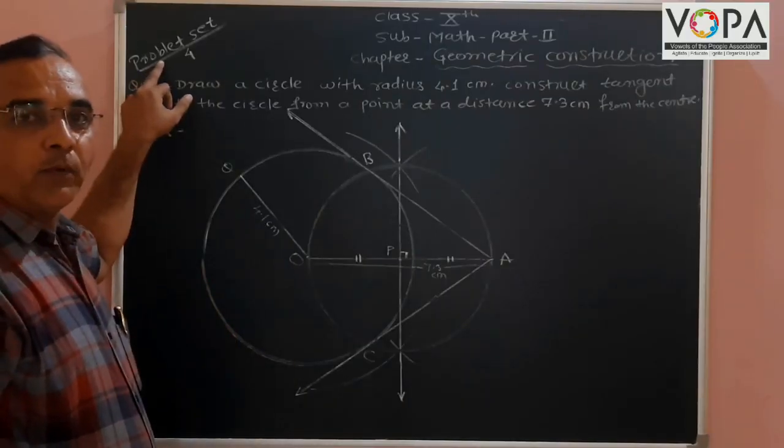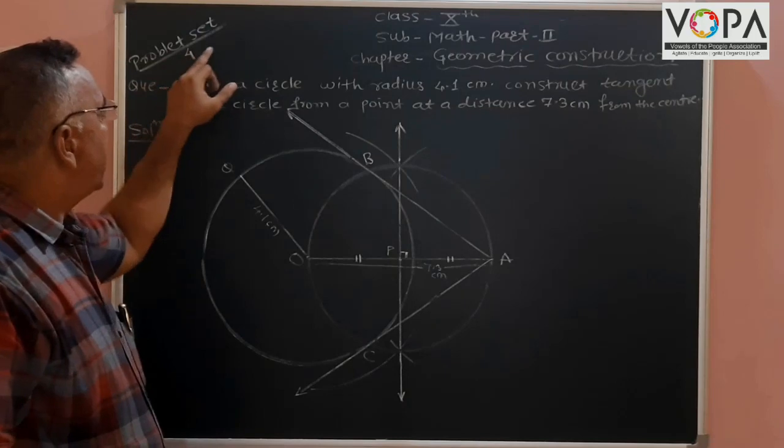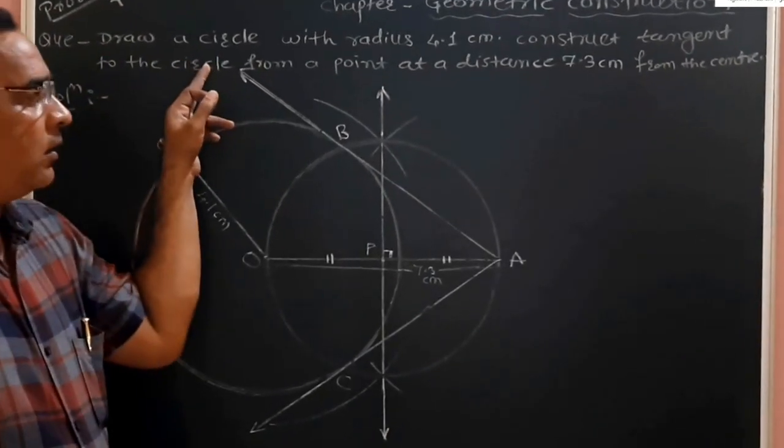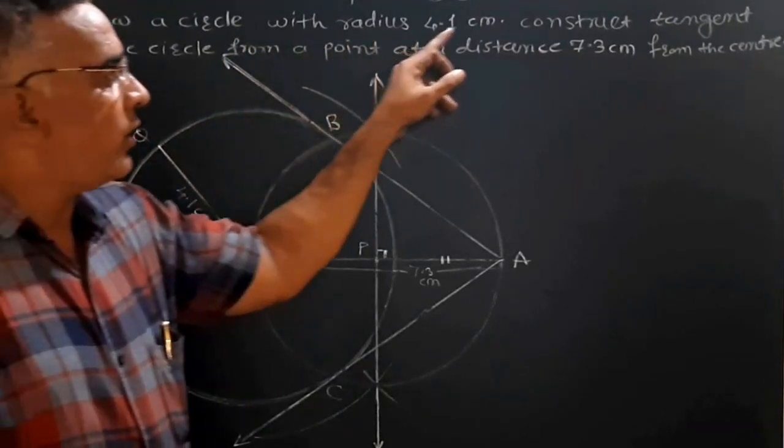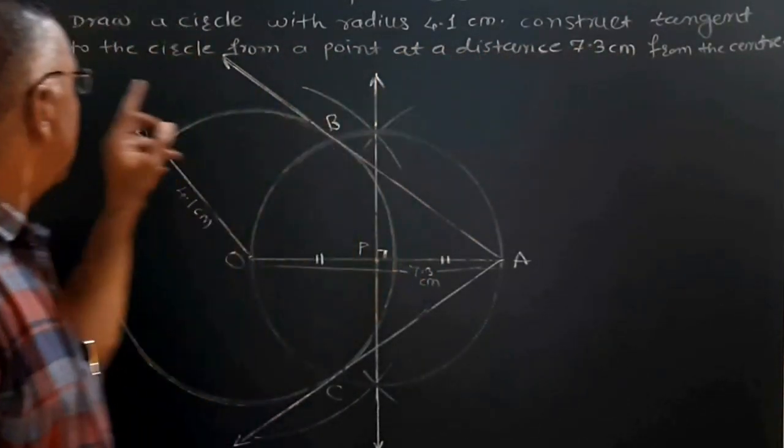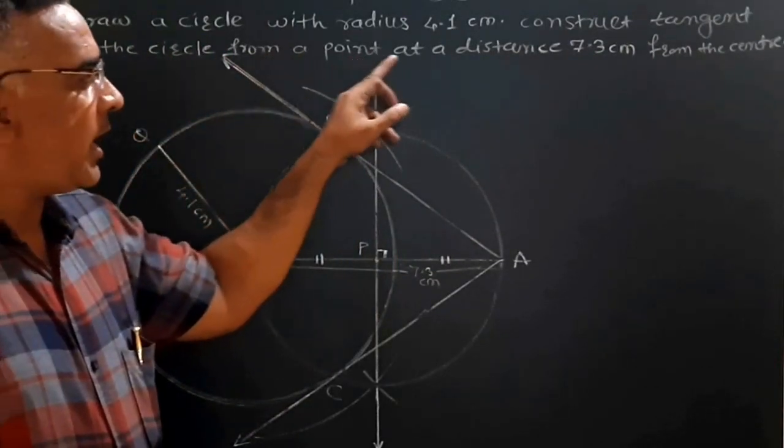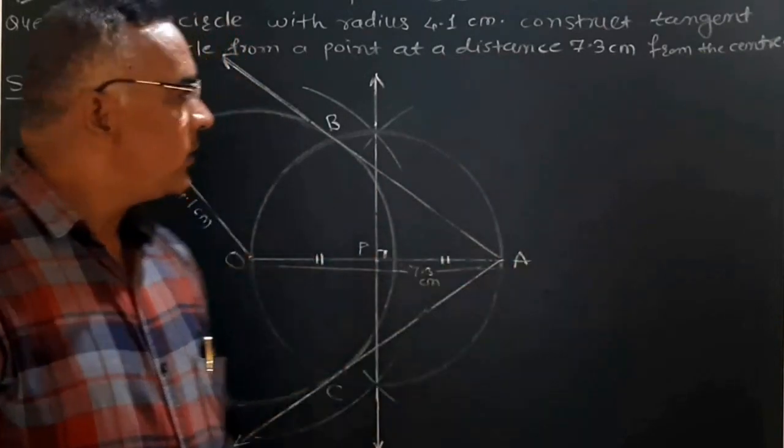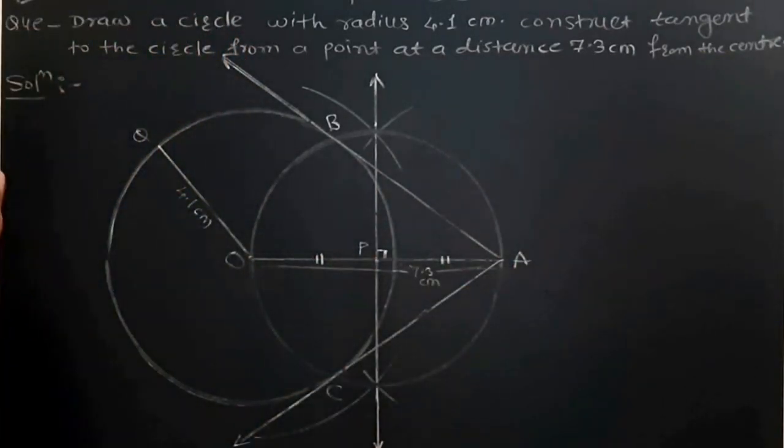To solve the problems on problem set 4, this is the first problem. Draw a circle with radius 4.1 cm, construct tangent to the circle from a point at a distance 7.3 cm from the center. Solution.